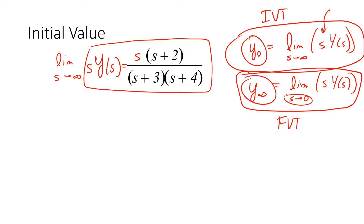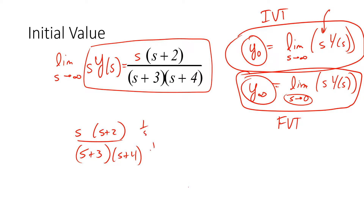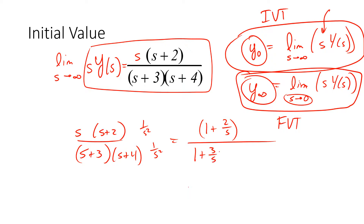Let's work through an example: s times (s+2) over (s+3)(s+4). Divide by s everywhere — that is, multiply top and bottom by 1/s — giving (1 + 2/s) on top and (1 + 3/s)(1 + 4/s) on the bottom.